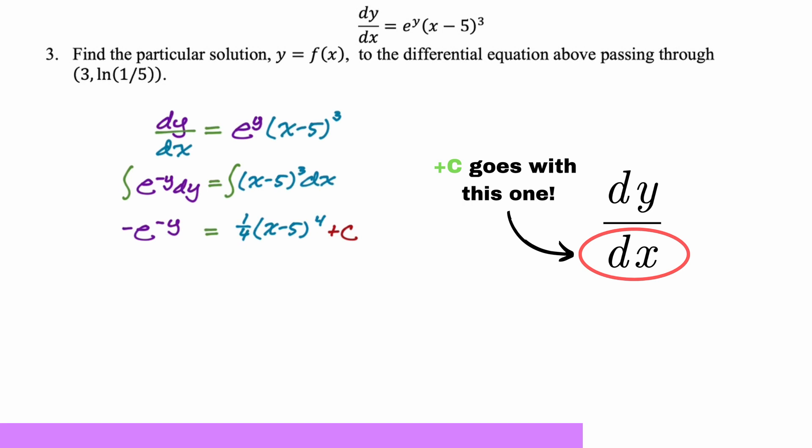Integral of e to the negative y is negative e to the negative y. And then on the right hand side, we get one fourth x minus five to the fourth plus c. So remember, c goes on the side with the independent variable, which in this case is x. Sometimes it's t. It could be anything, but it's very common for it to be x or t.